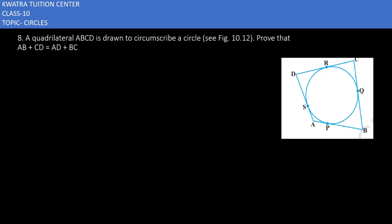A quadrilateral ABCD is drawn to circumscribe a circle. Prove that AB plus CD is equal to AD plus BC. So, what will happen first?